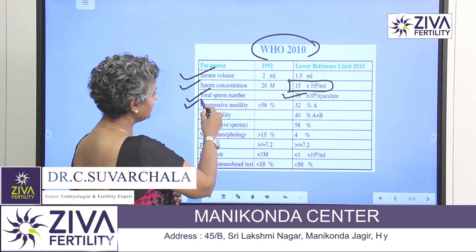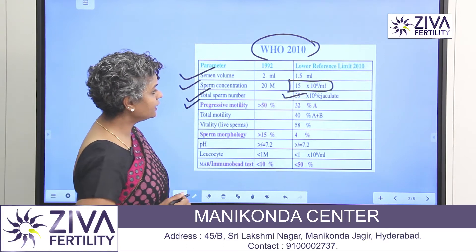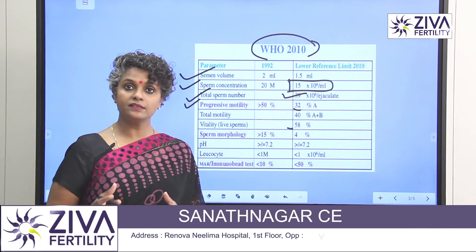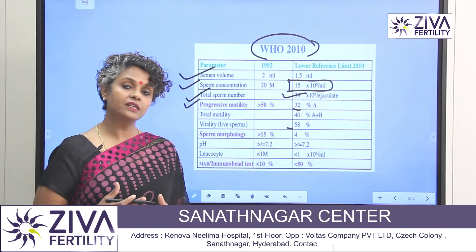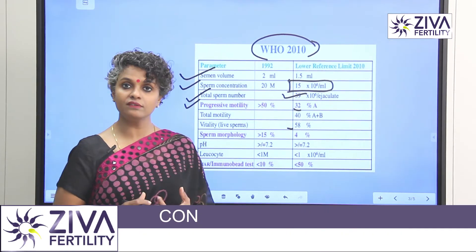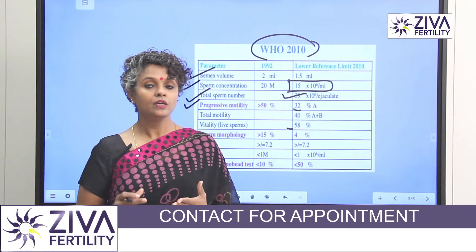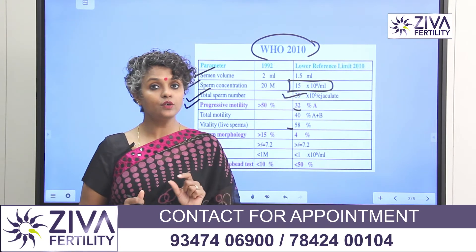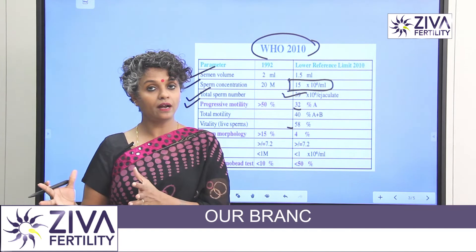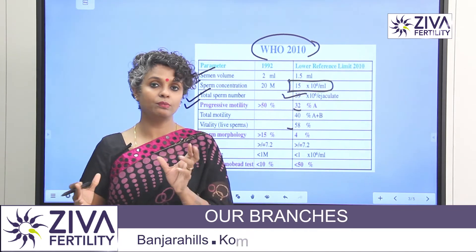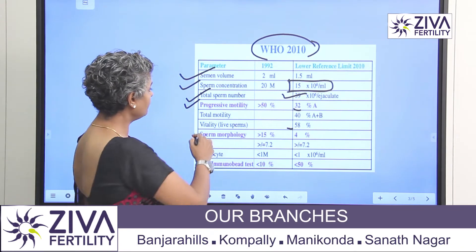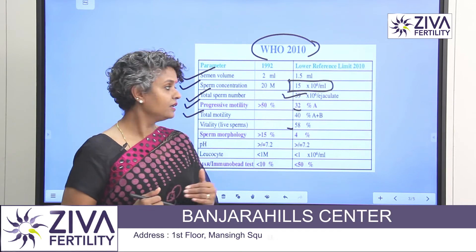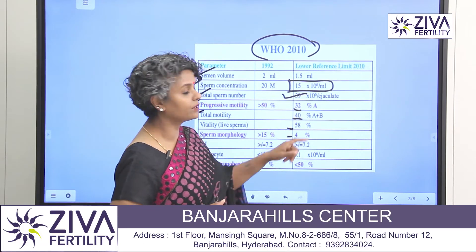If you look at progressive motility, it should be a minimum of 32 percent. In the entire sample, motility is assessed as progressive, non-progressive, or immotile. So looking at only the progressive motility, at least 32 percent of 100 sperms should be motile. But if you look at total motility — that is progressive and non-progressive combined — then the motility should be at least 40 percent.